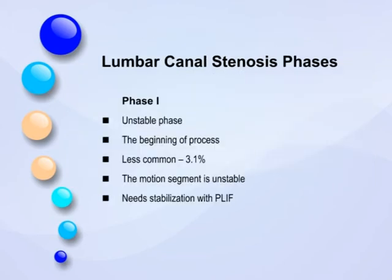Lumbar Canal Stenosis can be essentially characterized into two phases. Phase 1 is the beginning of the process. It is an unstable phase and less commonly seen. The motion segment in this phase is unstable and needs stabilization with posterior lumbar interbody fusion.